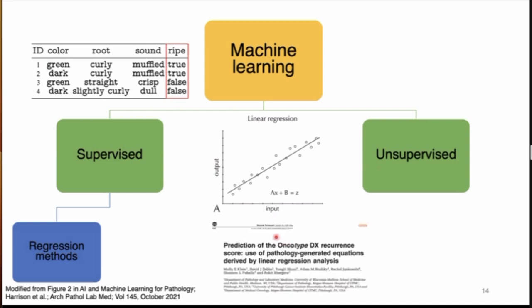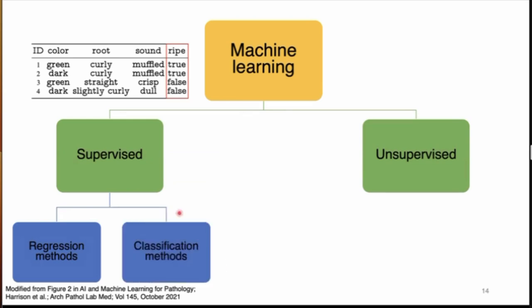As an example, Dr. Klein was the first author on a paper that used a number of more easily accessible factors to predict the Oncotype DX score. They created new versions of the McGee equation using multiple linear regression based on relatively low-cost pathology data: the Nottingham score, Ki-67 index, tumor size, ER and PR scores, and HER2. They were able to predict the Oncotype DX score, which is a more costly genomic analysis for determining the likely benefit of chemotherapy and risk of recurrence in breast cancer.